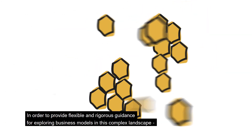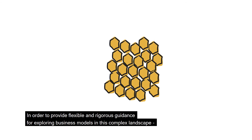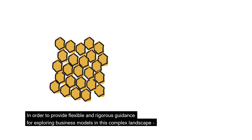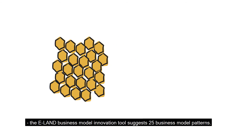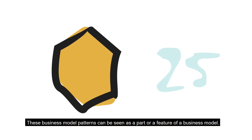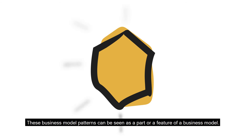In order to provide flexible and rigorous guidance for exploring business models in this complex landscape, the ELAND Business Model Innovation Tool suggests 25 business model patterns. These business model patterns can be seen as a part or a feature of a business model.